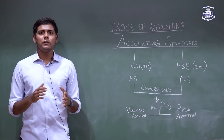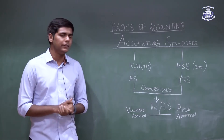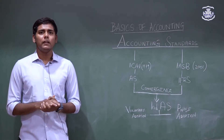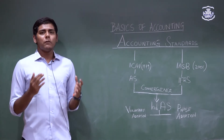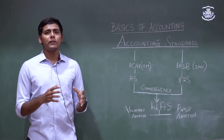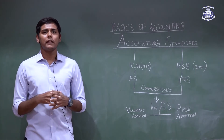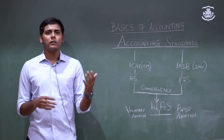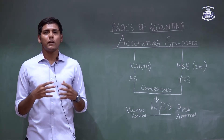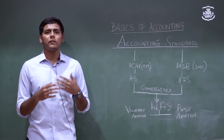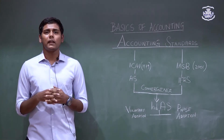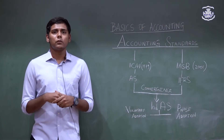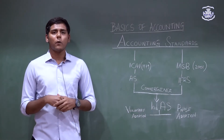These principles and rules are commonly called accounting standards. The accounting standards followed in India were issued by the ICAI — the Institute of Chartered Accountants of India — in 1979. Just as different countries have their own languages, different countries had their own accounting standards. When globalization started and Indian companies went abroad and foreign companies came to India, it became difficult to understand the financial information of different countries due to different accounting standards.